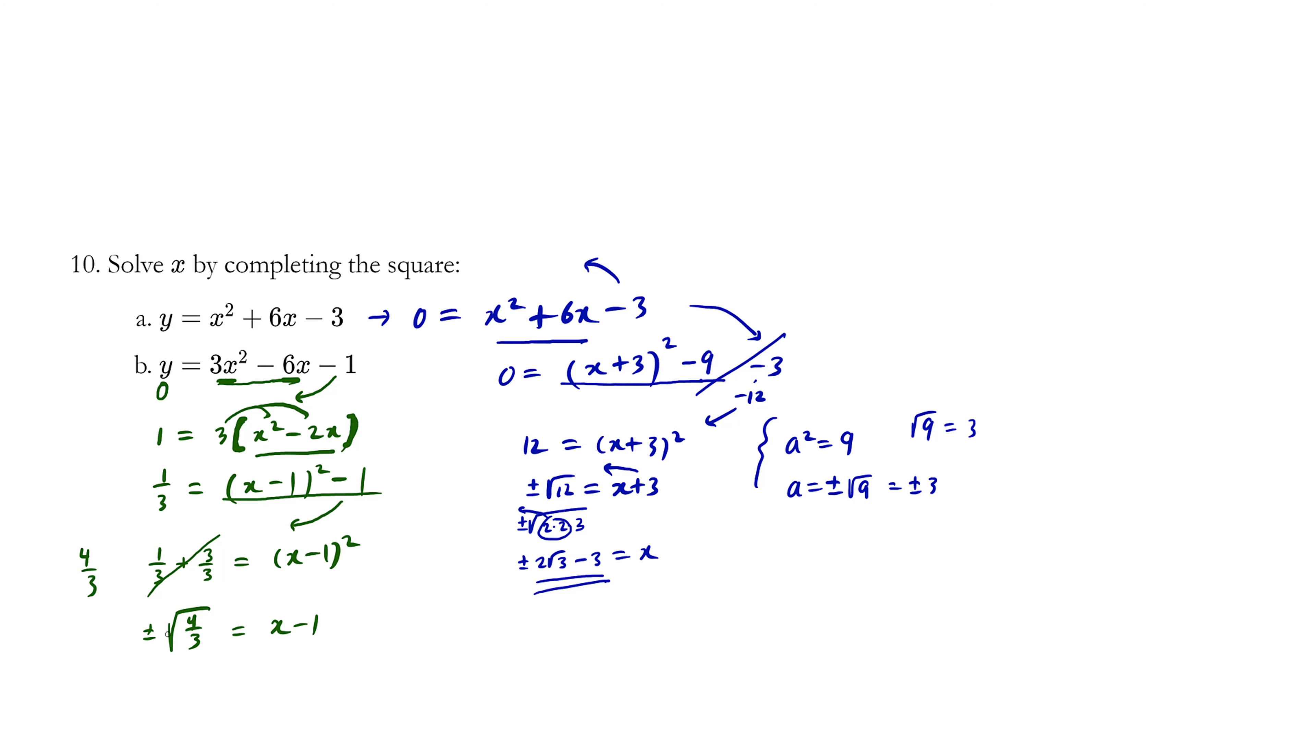And by the way, you're allowed to take the square root of the top and the bottom. So this is also equivalent to plus minus root. So the square root of 4 becomes 2. And the square root of 3 becomes root 3. And the minus 1 when you throw it over becomes a plus 1. So this is the value of x. This is an acceptable answer.